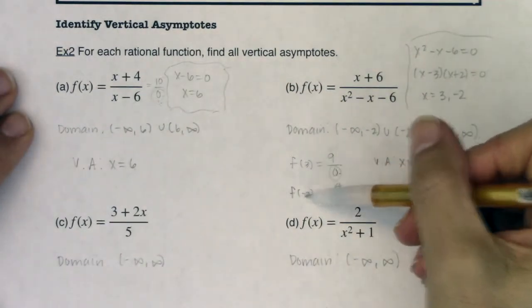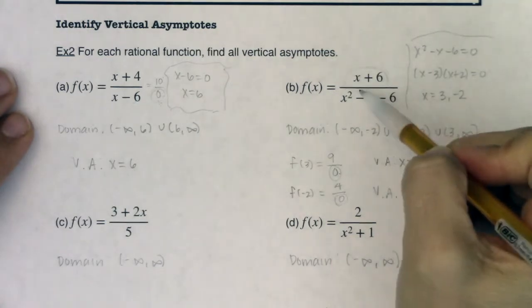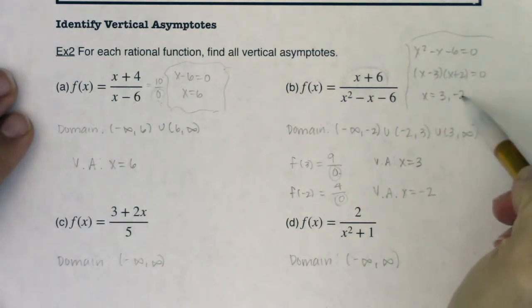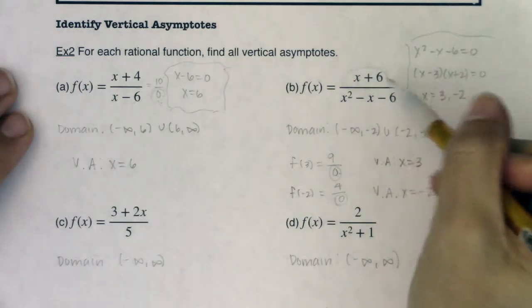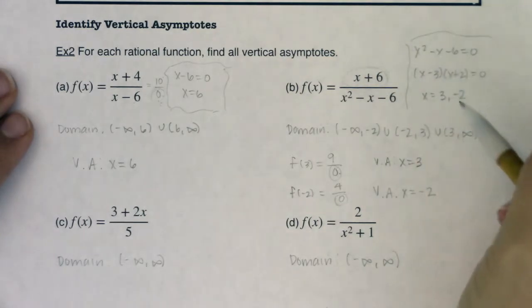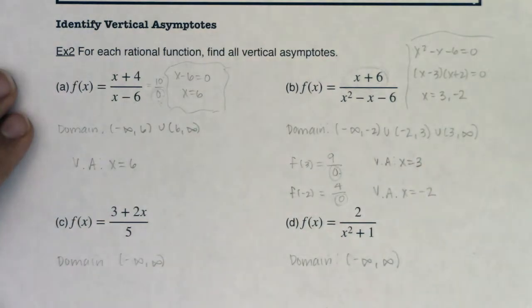I don't even necessarily need to plug three and negative two in, because what's the value that zeroes out my numerator? Well, maybe you see it's negative six, so since I'm plugging in three and negative two, I know they're not going to zero out my numerator, because the number that zeroes out my numerator is negative six, and since these two numbers only zero out my denominator, they're both vertical asymptotes.